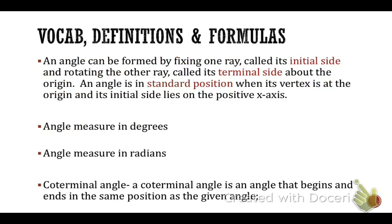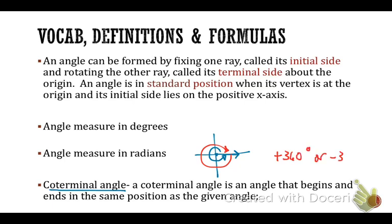Before we do examples on coterminal angles, go back to your definition section. Coterminal angles begin and end in the same place, and since angles can rotate more than 360 degrees, coterminal angles are within 360 degrees of each other — they can be positive or negative. To find a coterminal angle, you can add 360 degrees or subtract 360 degrees, which is like doing a full rotation in the positive or negative direction.